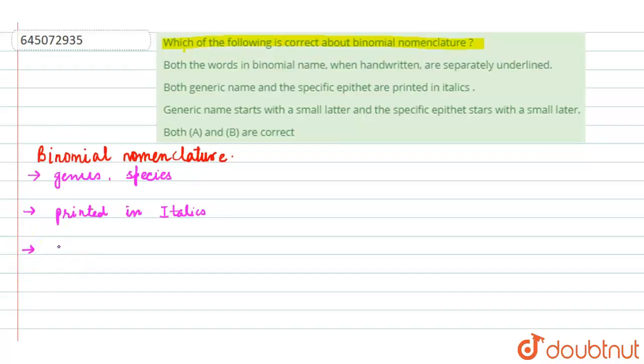And when they are handwritten, we underline them separately. Separately means that we underline the genus and species separately.